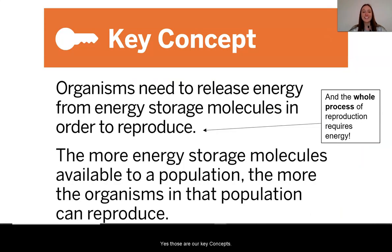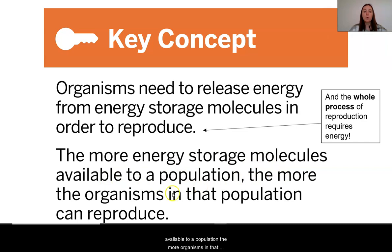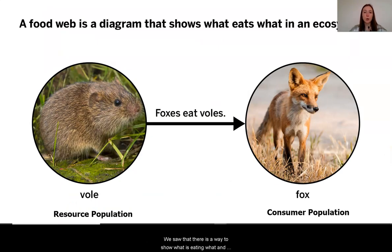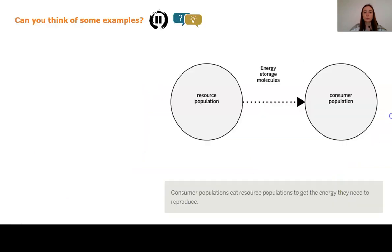Organisms need to release energy from energy storage molecules in order to reproduce. We know now that it is the whole process of reproduction — from finding a mate, to protecting the eggs, to actually giving birth — that requires energy. The more energy storage molecules available to a population, the more the organisms in that population can and probably will reproduce. We also know there is a way to show what is eating what and where energy storage molecules are coming from — this is called a food web diagram, showing what is eating what in an ecosystem.